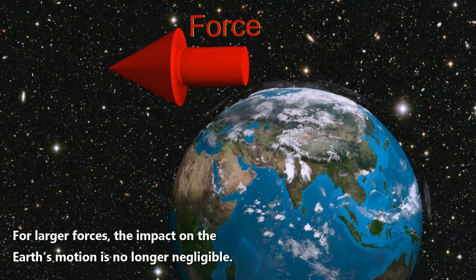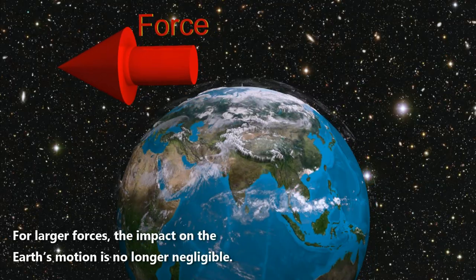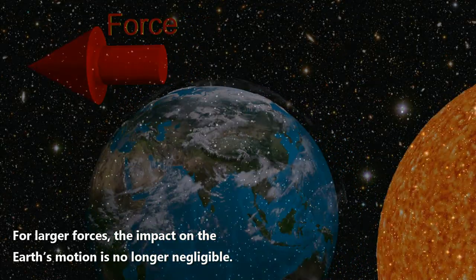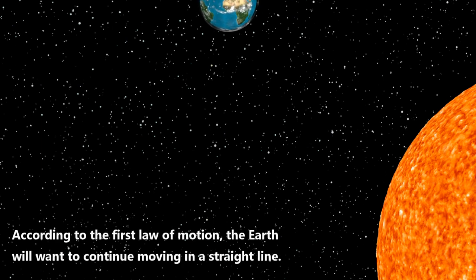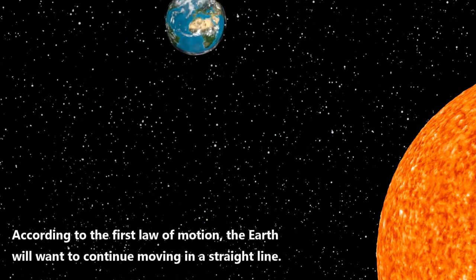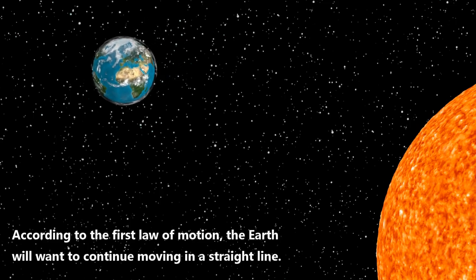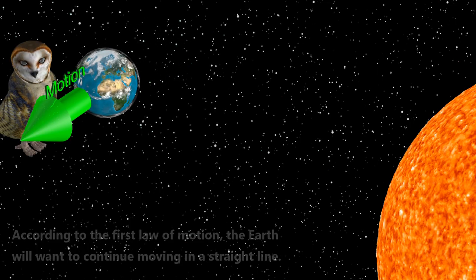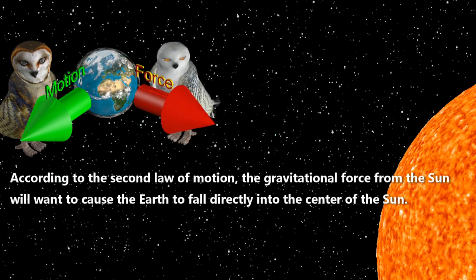For larger forces, the impact on the Earth's motion is no longer negligible. According to the first law of motion, the Earth will want to continue moving in a straight line. According to the second law of motion, the gravitational force from the Sun will want to cause the Earth to fall directly into the center of the Sun.